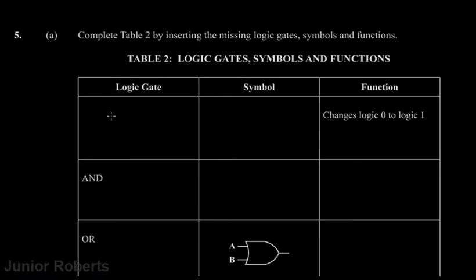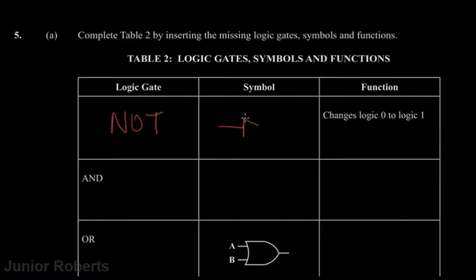So we're going to write in the NOT gate. The NOT gate takes in a single input and produces a single output. The symbol for the NOT gate is simply a triangle with a bubble at the output. Whatever it takes in as input, it inverts that and sends it to the output.